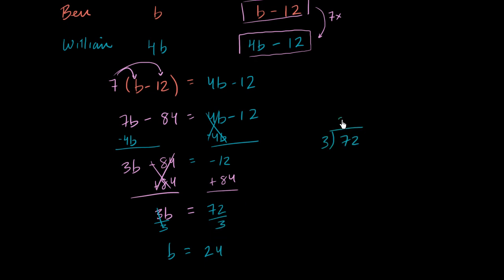And you can work it out on paper if you have trouble. Let's just do it real quick. Three goes into seven two times. Then you get a two times three is six. Subtract. Bring down the two. Three goes into twelve four times.